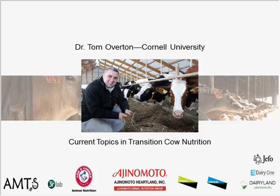Thomas R. Overton, PhD, is a professor of dairy management in the Department of Animal Science at Cornell University. Tom is recognized nationally and internationally for his research and extension efforts relating to metabolism, immune function, and nutritional physiology of the transition cow, and his work on milk component production in cows. He serves as director of the Pro Dairy Program at Cornell and as associate director of the Cornell Cooperative Extension, with statewide and regional extension teams in New York.